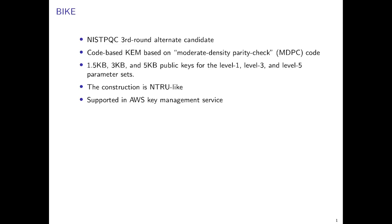BIKE is one of the third-round alternate candidates of the NIST PQC standardization process. It is a code-based scheme based on so-called moderate-density parity check code, which is essentially the same as low-density parity check code. The public keys of BIKE are pretty small: 1.5 kilobytes, 3 kilobytes, and 5 kilobytes for the level 1, level 3, and level 5 parameter sets. The reason why BIKE can have small keys is because the construction is ring-like. Some ring structures have been included in BIKE's construction.